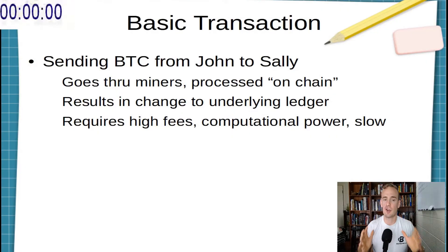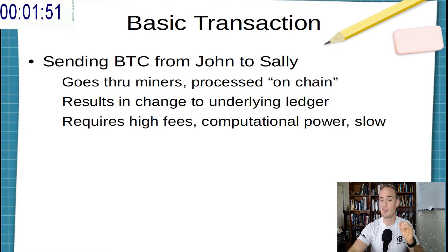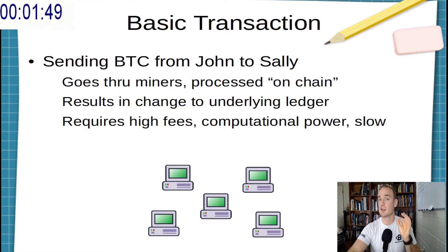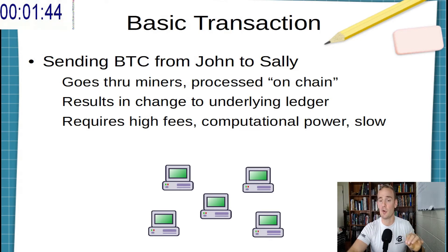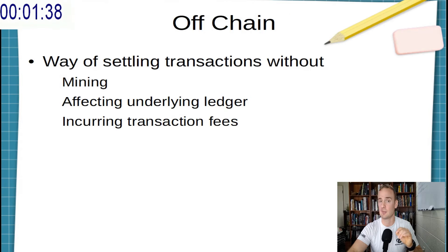To review the basics of blockchain: whenever you send a transaction it gets processed through the blockchain and affects a distributed public ledger. This is good and secure, but the problem is that it requires a lot of computational power, a lot of energy, it can be expensive, and it can be slow. Settling transactions in this way is sometimes called on-chain settlement or main net settlement.